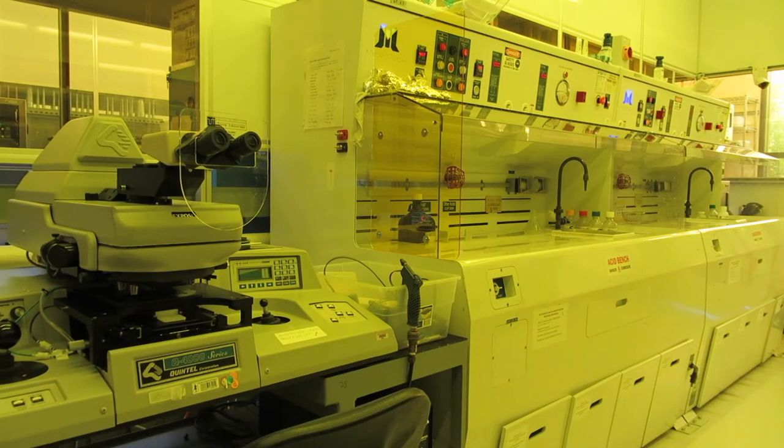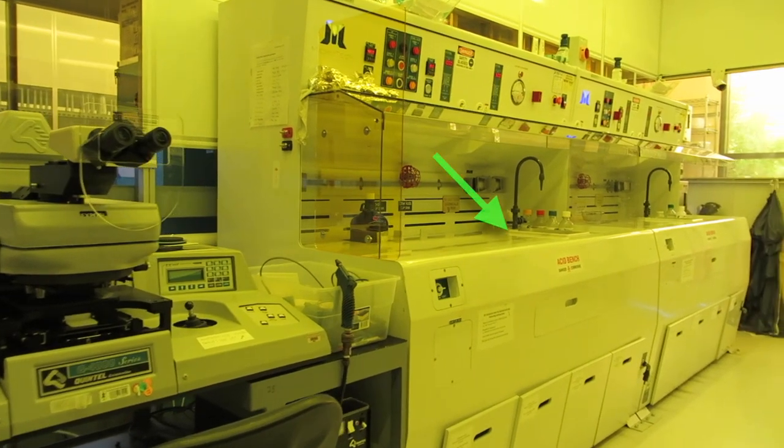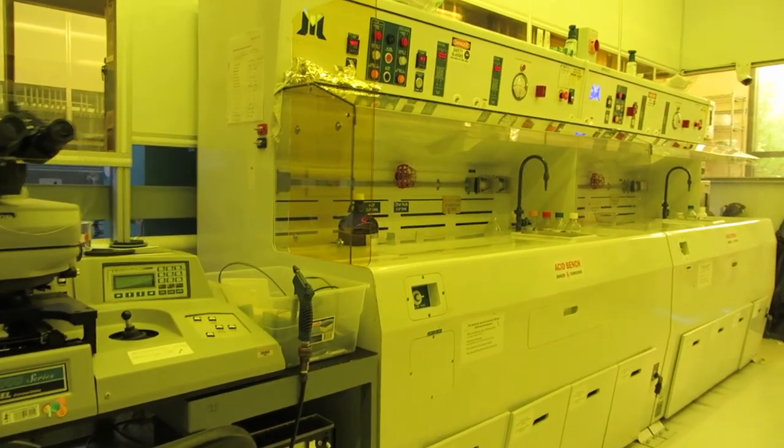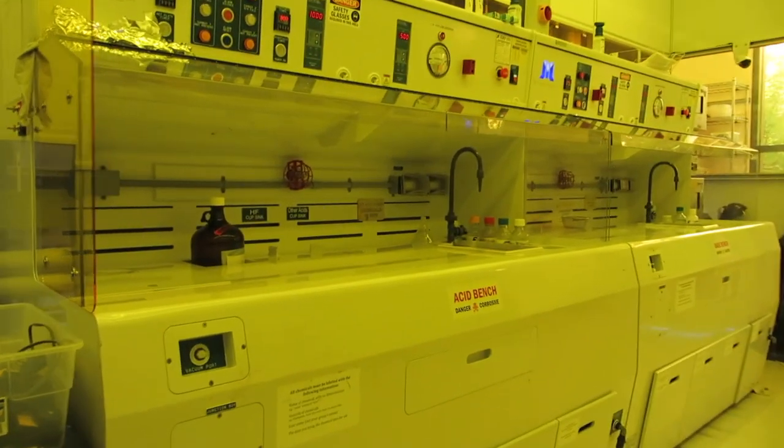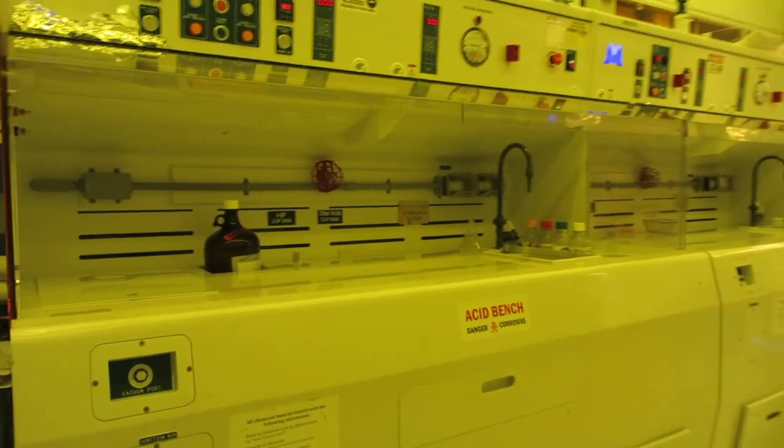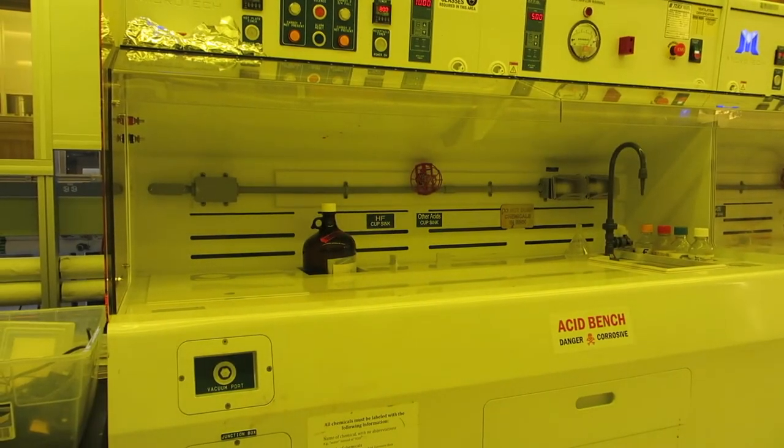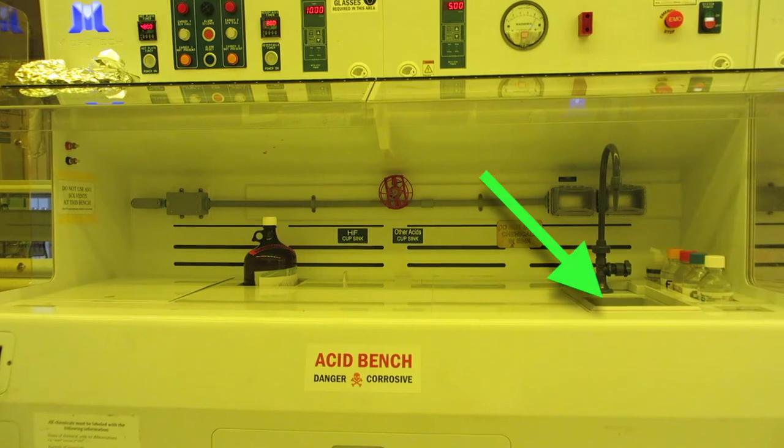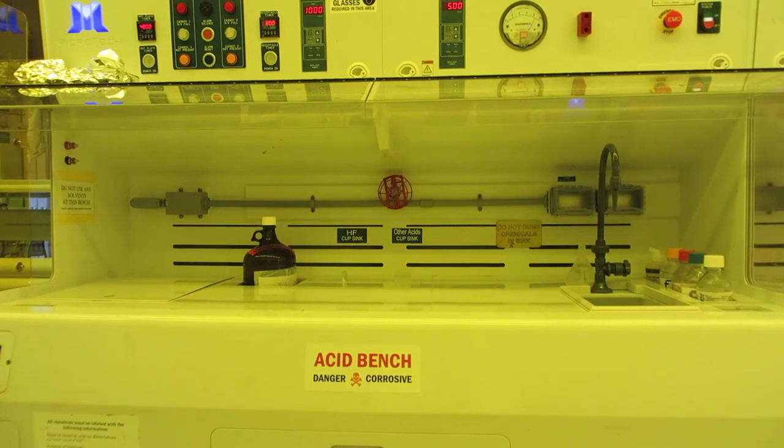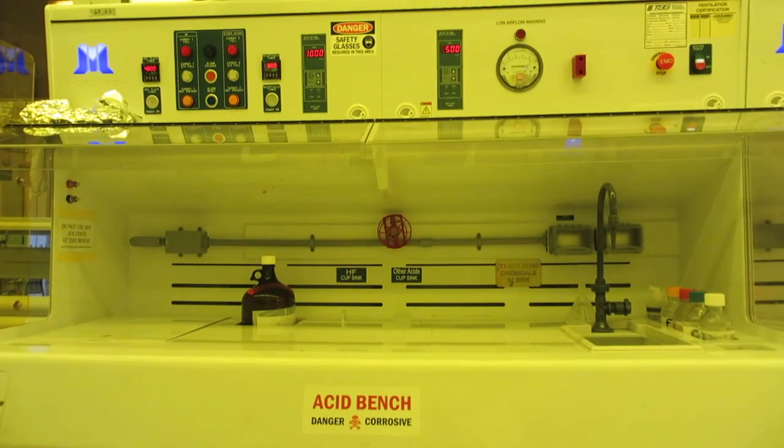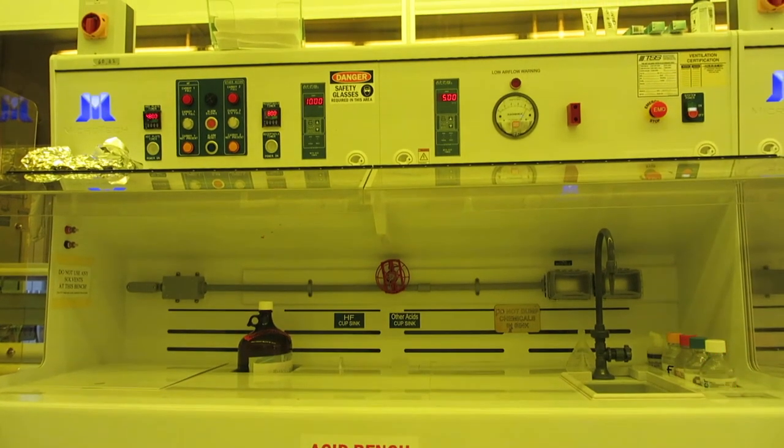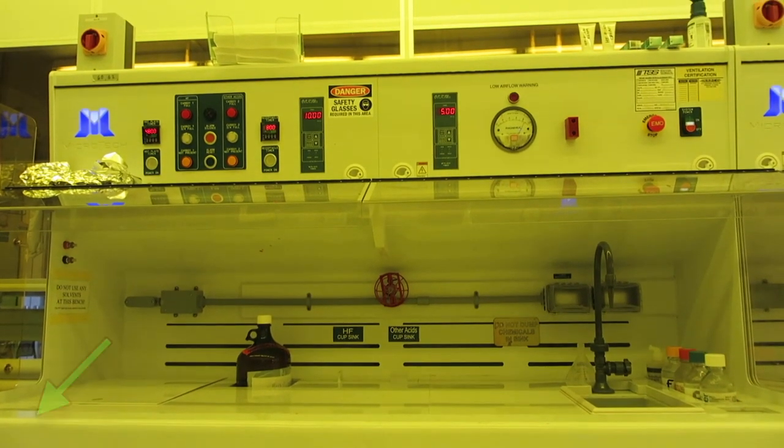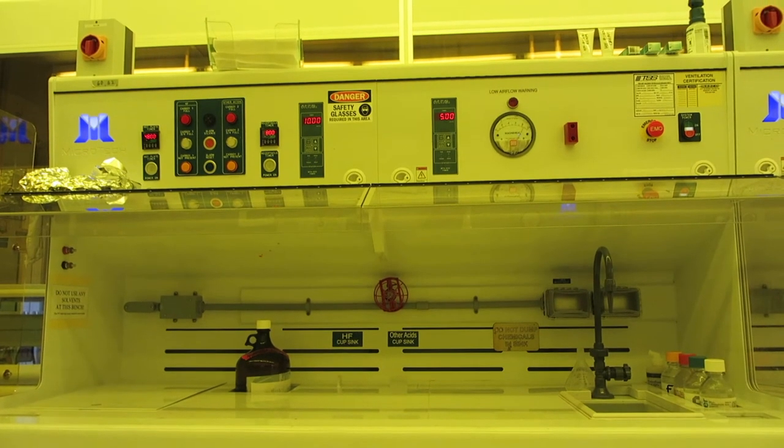Now we'll move on to the acid bench. This sink and the other two sinks in this room provide 18 megaohm deionized water. Only non-corrosive non-toxic things such as water or dilute detergent should go down the drains in these sinks. There are also DI water guns located in sunken wells near each sink in this room. And there are nitrogen guns at both ends of every wet bench in this room.